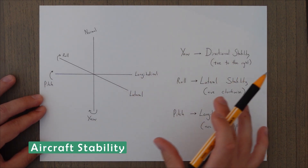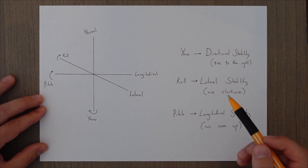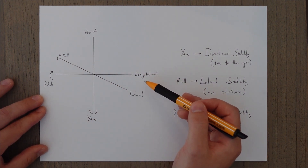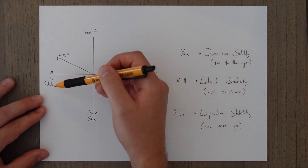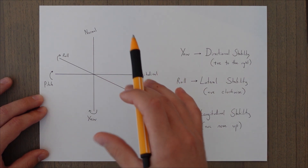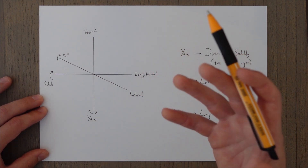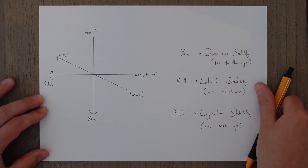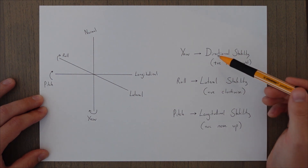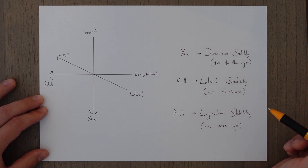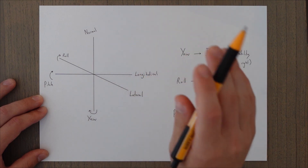Applying stability concepts to an aircraft, we have three dimensions: the normal axis, the lateral axis, and the longitudinal axis. Rotation around the normal axis is yaw, rotation around the longitudinal axis is pitch, and around the lateral axis is roll. In terms of stability we don't use the terms roll, pitch, and yaw stability directly. Instead, stability in yaw is called directional stability, stability in roll is called lateral stability, and stability in pitch is called longitudinal stability.